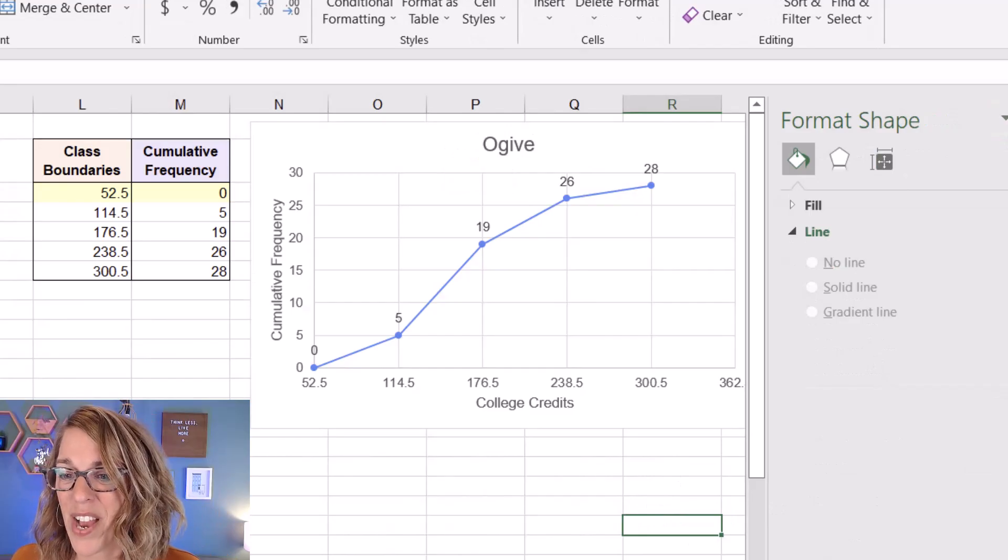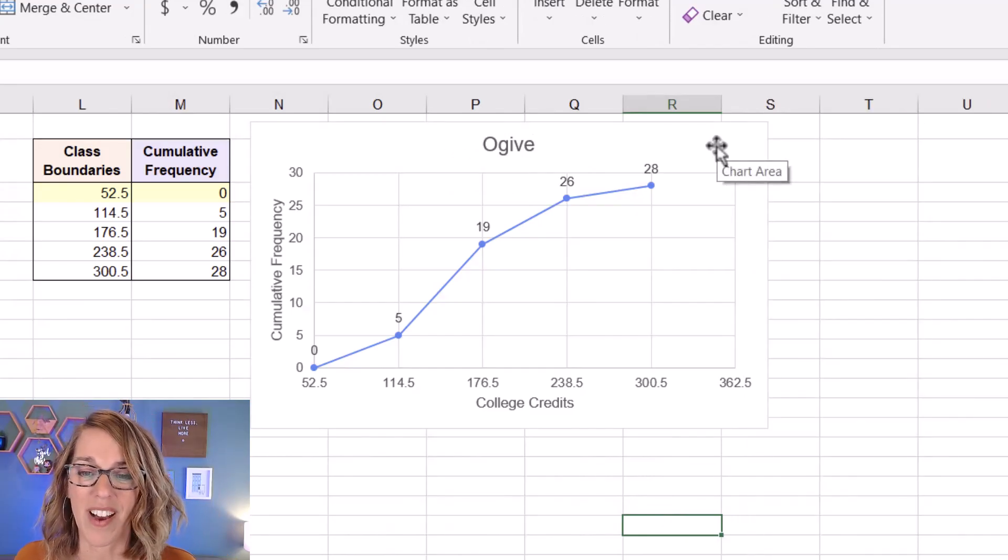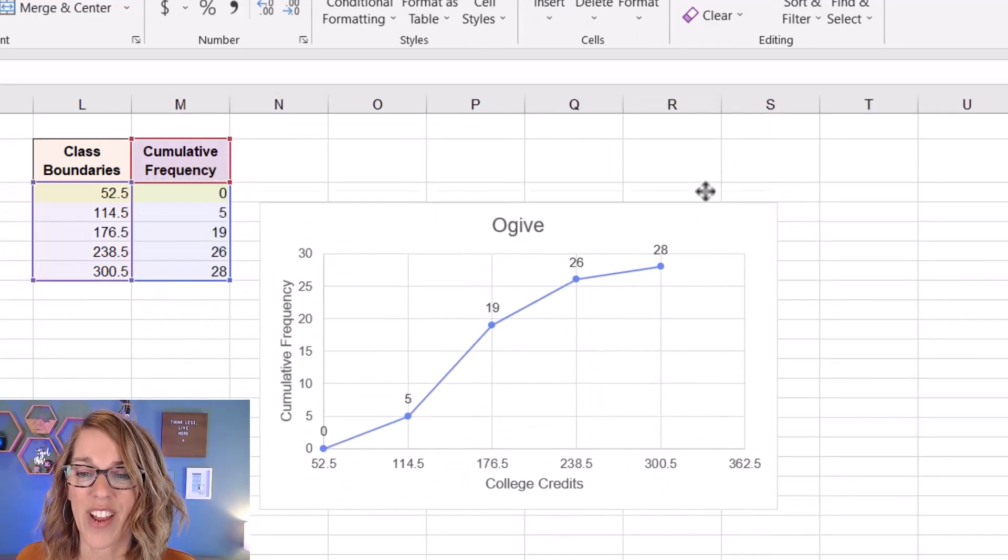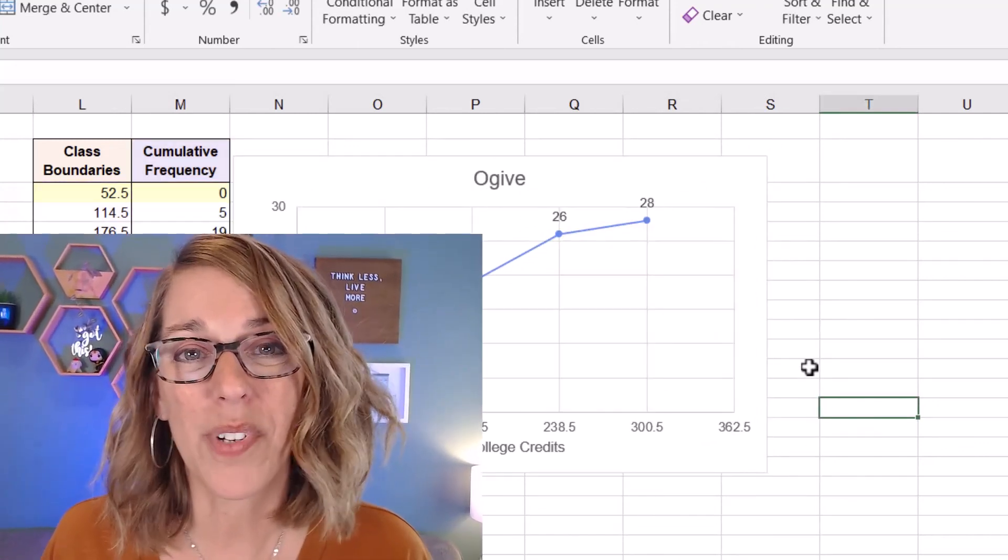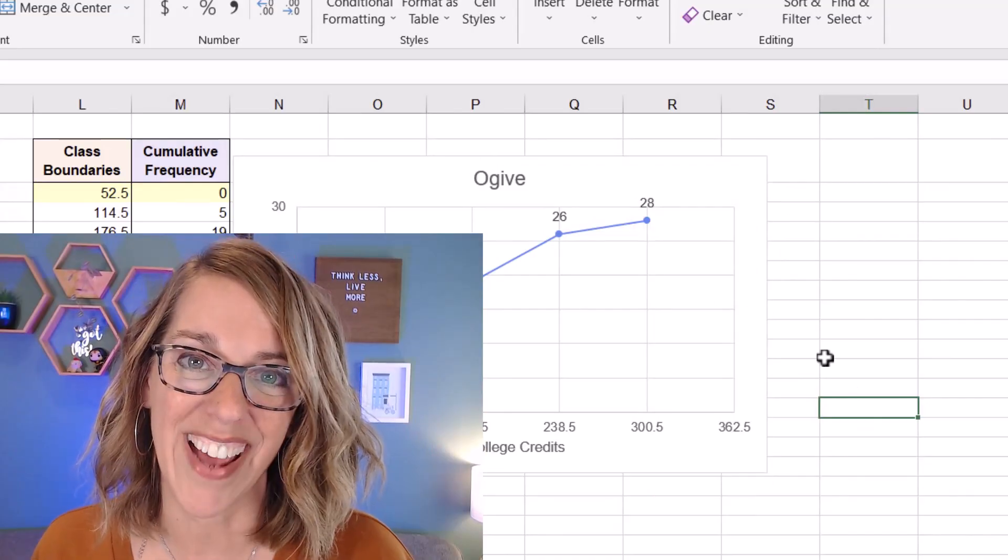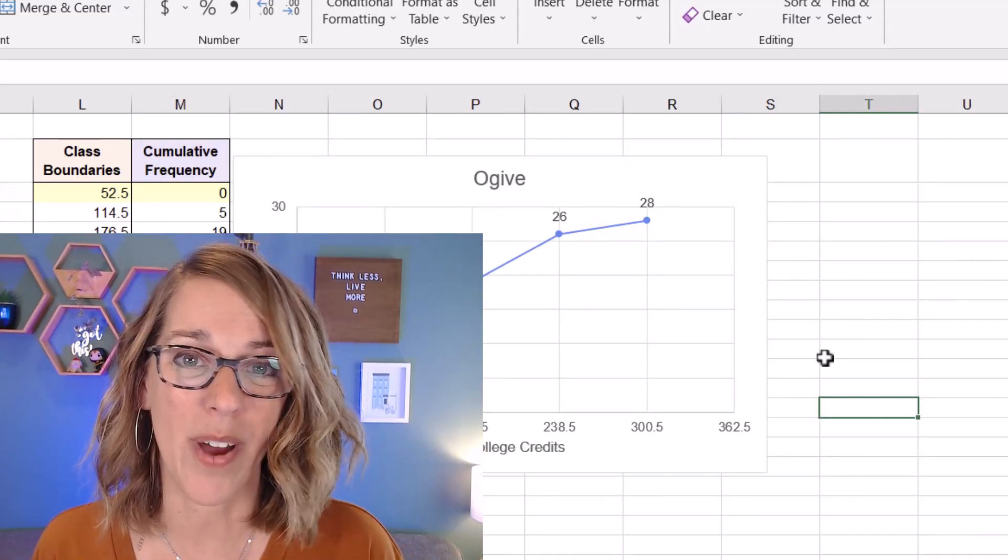So we've got a really great looking graph now. If I close out my dialog box, I can click, hold and drag this around. I can also resize it. I hope this was helpful. Take a look at my next video to learn more about stats and Excel. Thanks for watching.